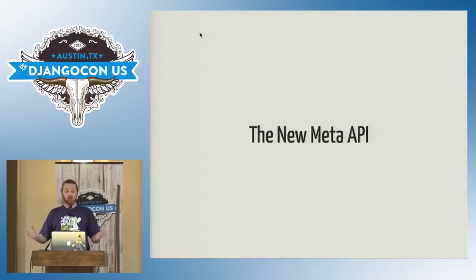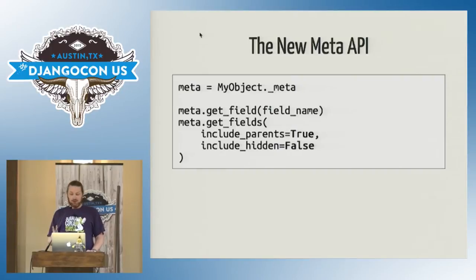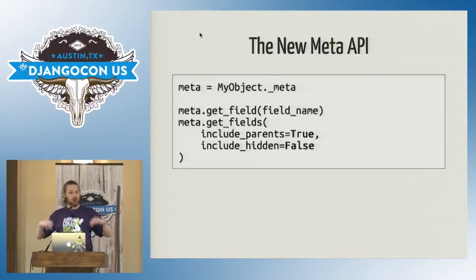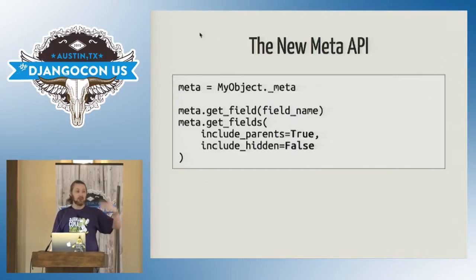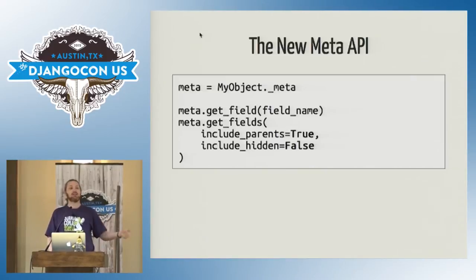What was the result of Daniel's work? A new stable meta API. The meta object is unchanged — you still say mymodel._meta. But now there's just two methods on there: get_field to return a field with a specific name, and get_fields to return a list of all fields on that model. You can optionally include fields from parent models and hidden fields if you're trying to learn something about your inheritance tree. Parent fields are the ones coming from your superclasses, and hidden fields are fields that back another field's functionality — for example, the underscore ID field on a foreign key, or fields that have been explicitly hidden like a foreign key with a related name starting with plus.